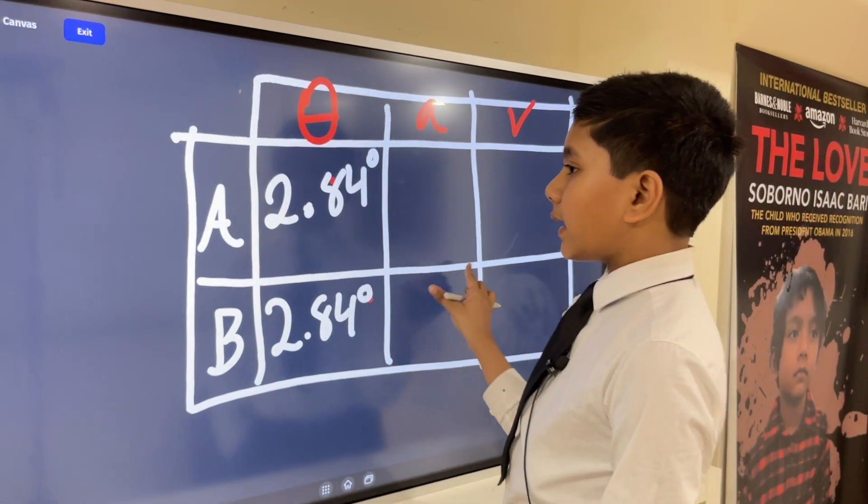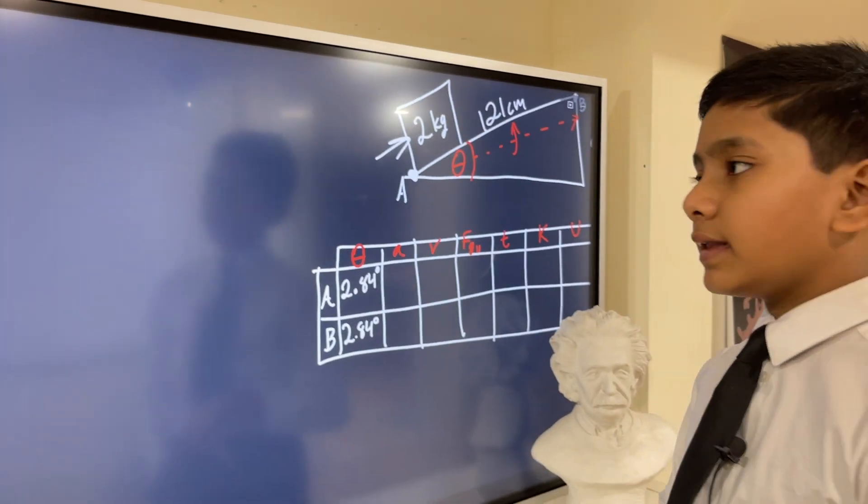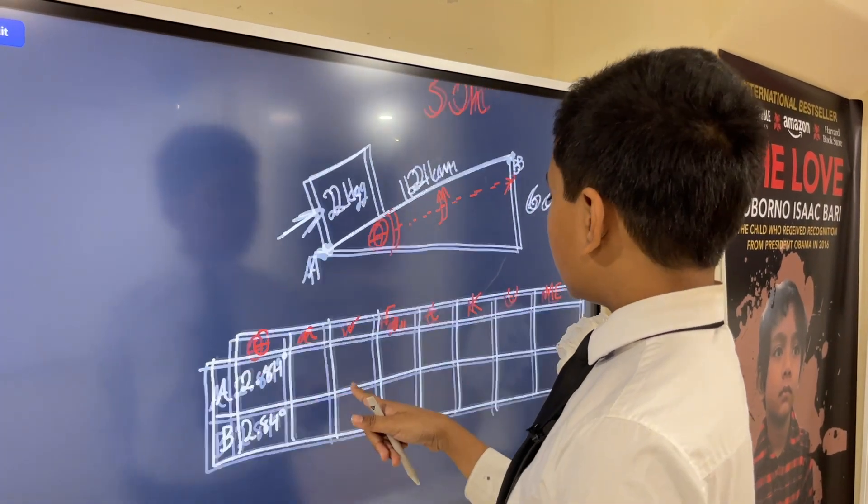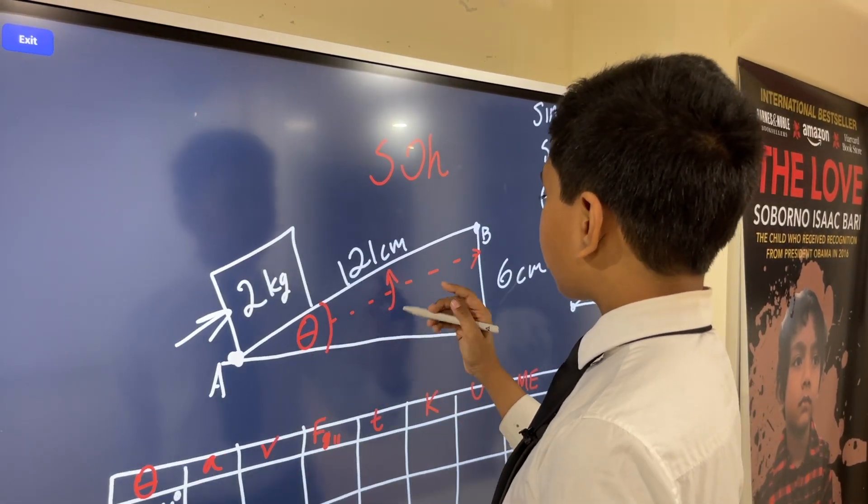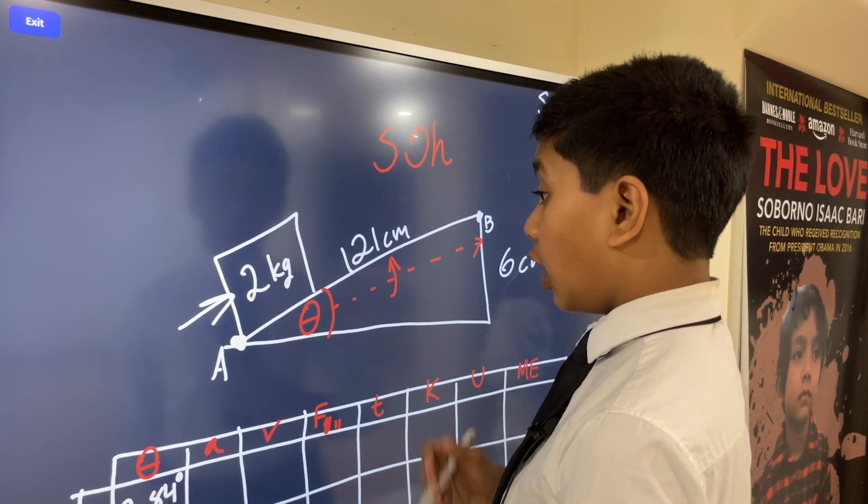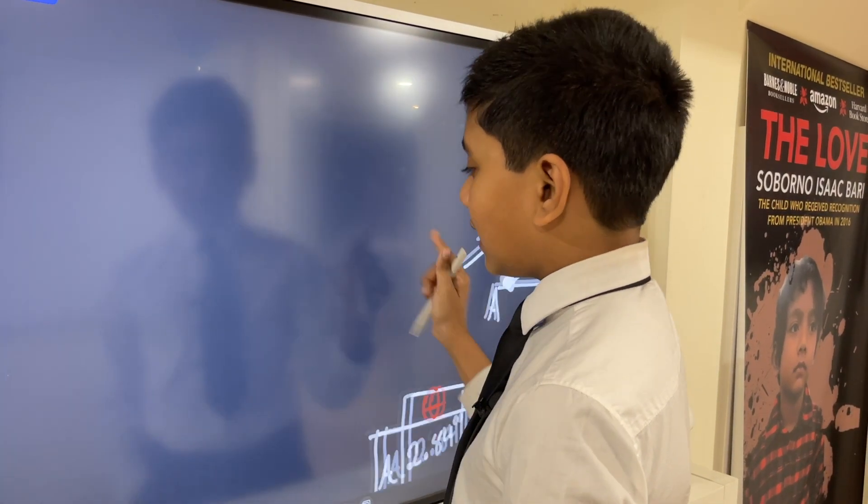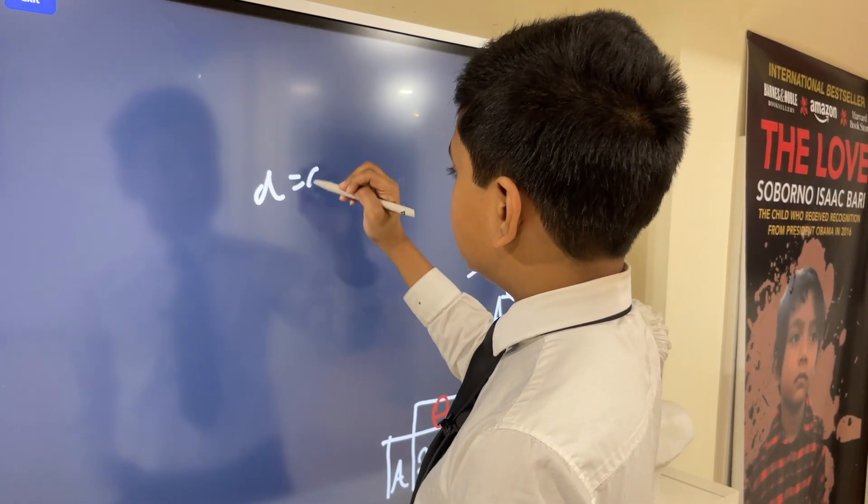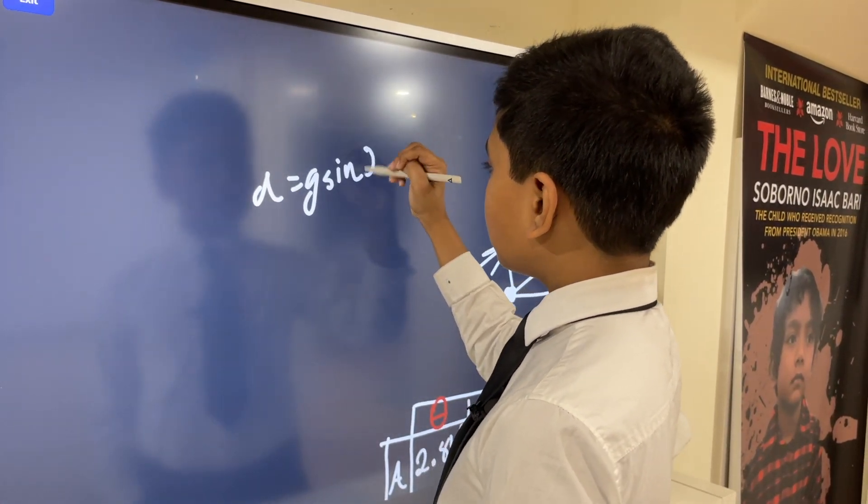Now, what about acceleration? Well, we can find acceleration very simply. Assuming that this is a frictionless plane, and it's almost frictionless, we can say that acceleration is just g sine theta. Why?